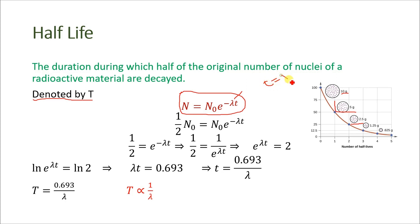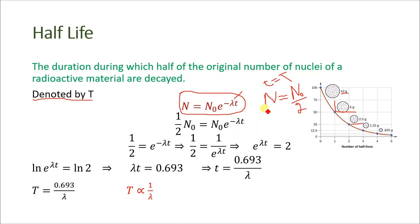Capital T represents the half-life. After every one half-life, the number of nuclei present in the radioactive material will be equal to N₀ divided by 2, because after every half-life the number of radioactive nuclei reduces to half. In the decay equation, we substitute N equal to N₀ divided by 2.